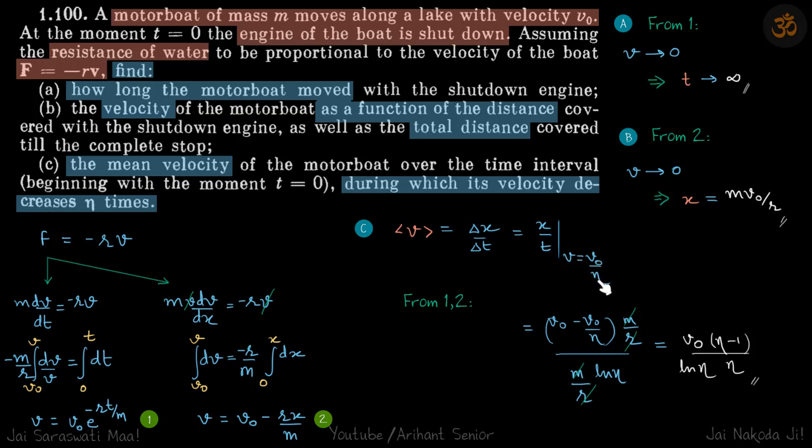For velocity to become v0 by eta, that we'll find from here. So we'll put v0 by eta here, and from here we'll get the time. This value of time we'll put from this equation. So basically from equations 1 and 2, we are putting the values of x and t when velocity is v0 by eta. So that will give our answer, this is the mean velocity.